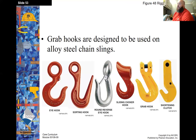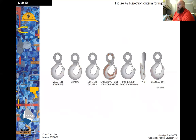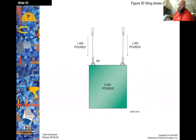Grab hooks are designed to be used on alloy steel chains. Rejection criteria for hooks include: wear or scraping cracks, cuts or gouges, excessive rust or corrosion, increase in throat opening, twist, or elongation.